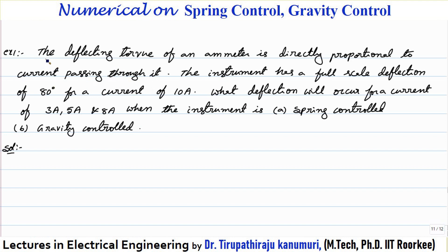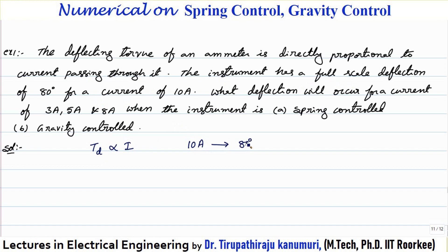The first example: the deflecting torque of an ammeter is directly proportional to the current passing through it. The instrument has a full scale deflection of 80 degrees for a current of 10 amperes. That means when 10 amperes is passing, theta equals 80 degrees — that is under full scale for both gravity and spring control.